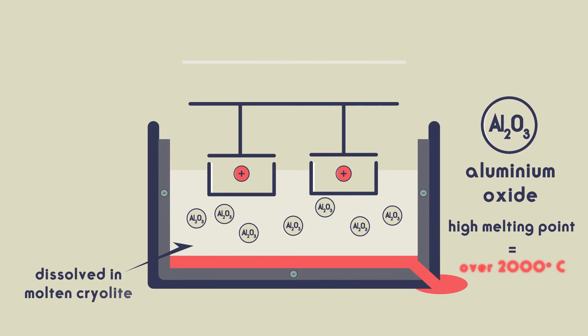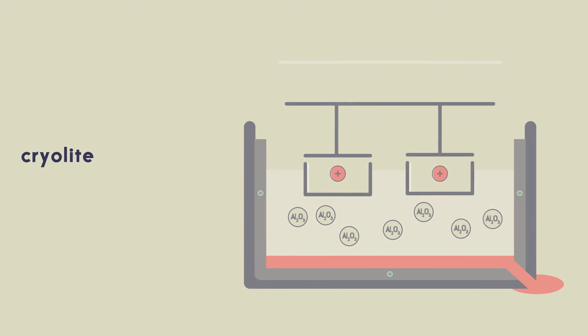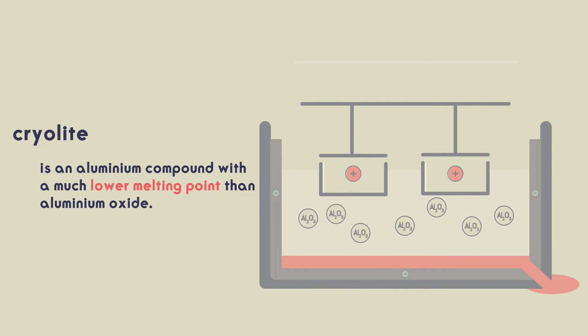Cryolite is an aluminium compound with a much lower melting point than aluminium oxide, and using this reduces some of the costs in extracting aluminium.